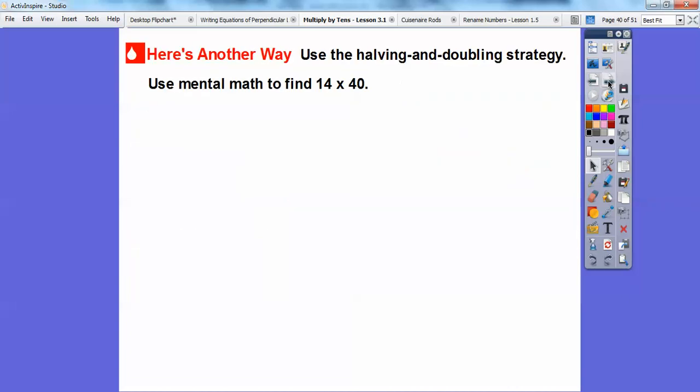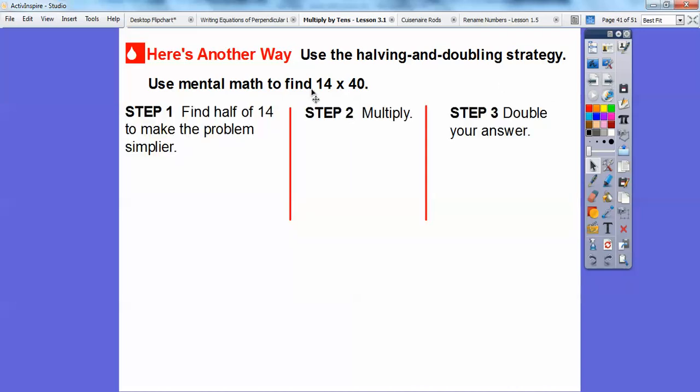We're going to do a different problem here, but we're going to do the halving and doubling strategy. So we're going to try and use mental math to find 14 times 40. So one way is to do this, is to take half of 14. Well, half of 14 is 7 and then it will make it simpler. So we do 7 times 40. So half of 14 is 7 and then 7 times 40 is 7 times 4 is 28 with a zero. 7 times 40 would be 28 with a zero. And then that's half of that. So now we just double that answer. So 2 times 280 is 560.